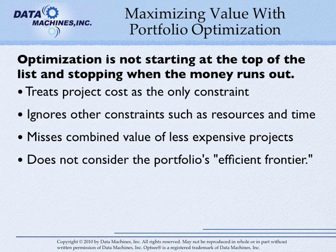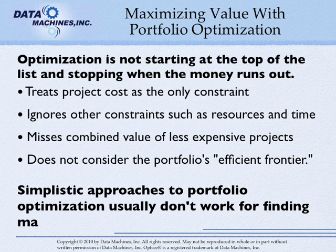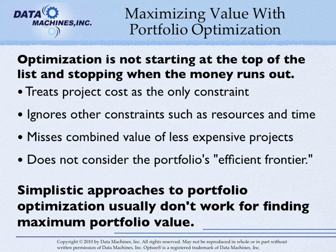Using efficient frontiers can show you where the greatest "bang for your buck" is. When you've scored your projects by value, you can get an efficient frontier of the value score over cost to see portfolios that will give you the most value per unit of cost. So we can see that simplistic approaches to portfolio optimization won't work for finding optimal value-maximizing project sets against multiple constraints.